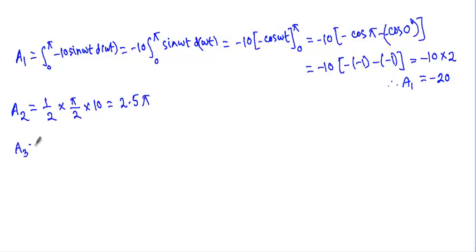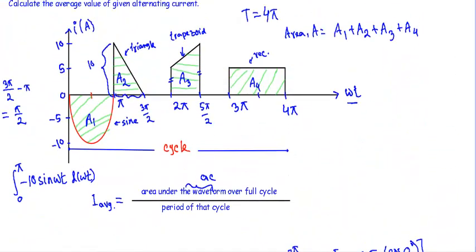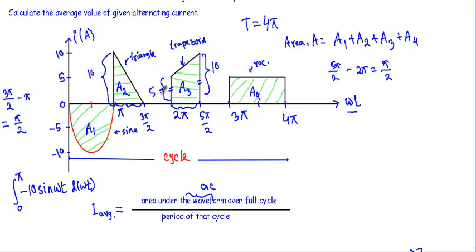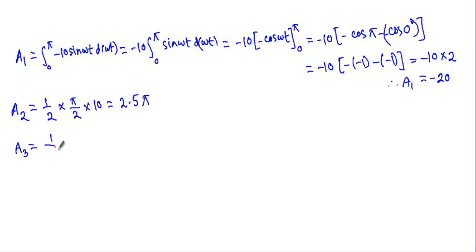Now I will calculate the area covered by the trapezoid. The two parallel lines have lengths of 5 and 10 respectively. The separation between the two lines equals 5π/2 minus 2π, which equals π/2. Therefore the distance between the two parallel lines is π/2. So A3 equals half times the sum of the parallel lines times the distance between them, giving A3 = half × (5 + 10) × π/2 = 15π/4, which equals 3.75π.